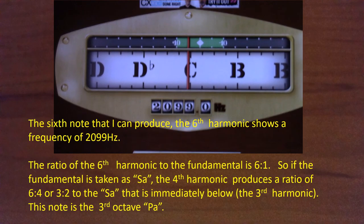The sixth harmonic shows a frequency of around 2099 hertz. The ratio of the sixth harmonic to the fundamental is six to one. So if the fundamental is taken as Sa, the sixth harmonic produces a ratio of six to four, or three to two, to the Sa that is immediately below — the third harmonic. This note is the third octave Pa, or Panchamam.